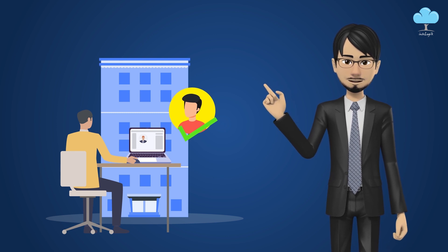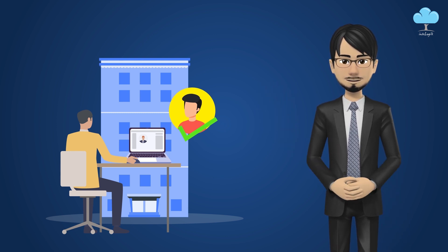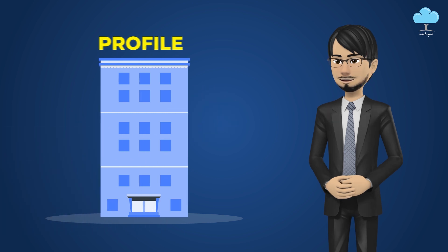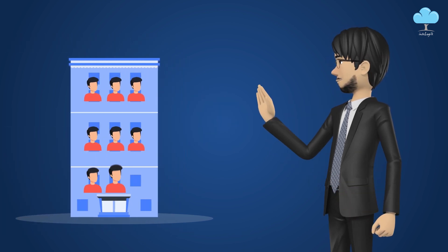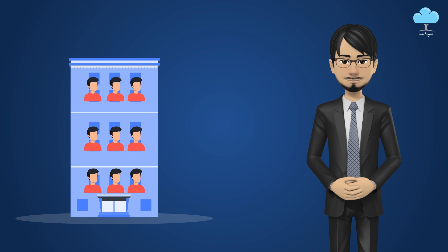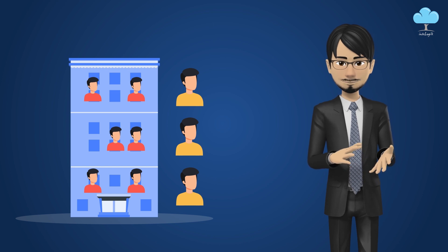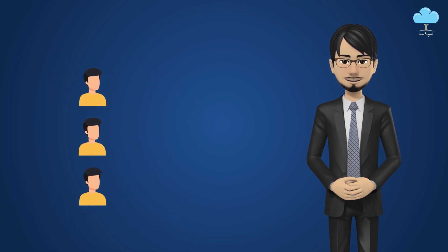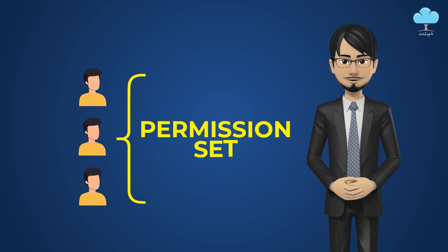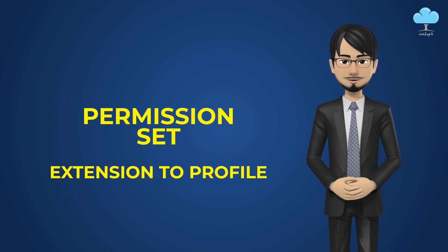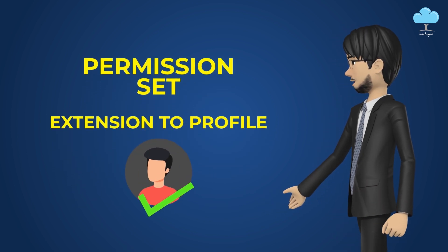Let's say in that department there are one hundred or one thousand people, but suppose from those people you have to give a special permission to only a limited two, three, four, or five people — then what to do? At that time you should use a permission set. That is why permission set is also called as an extension to profile.